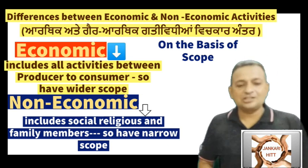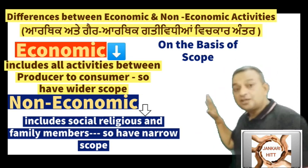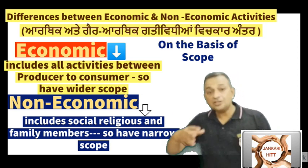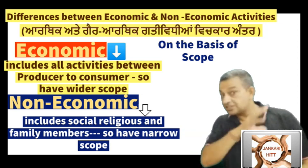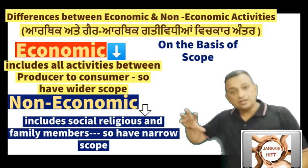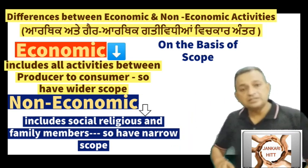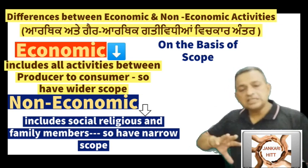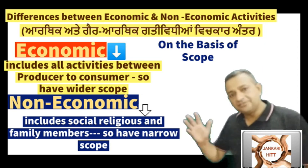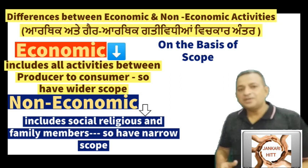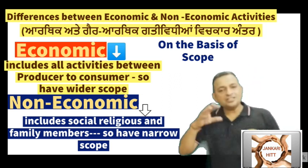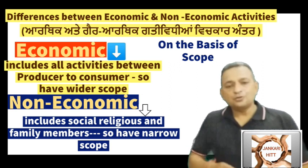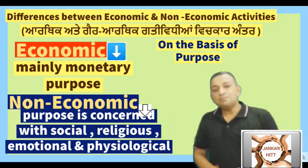Economic activities involve activities between producer and consumer. They include advertising, marketing, banking facilities, insurance, and commerce — the scope of economic activities is very wide. On the other hand, non-economic activities are performed by human beings on a personal, religious, or social basis, making their scope comparatively smaller.